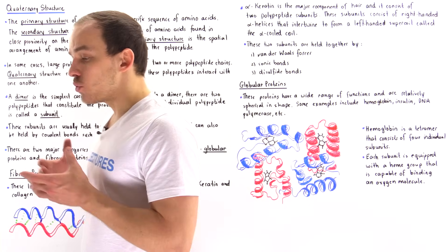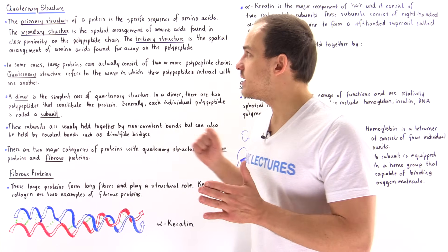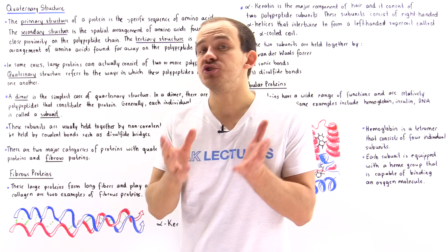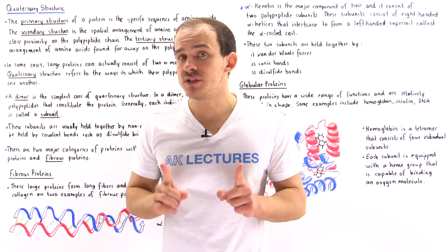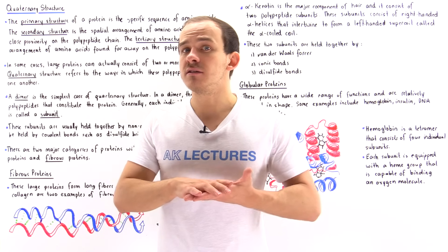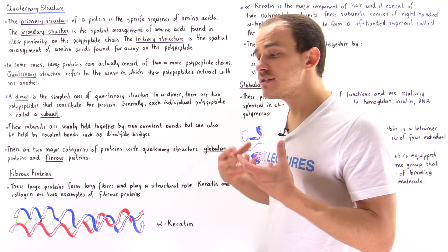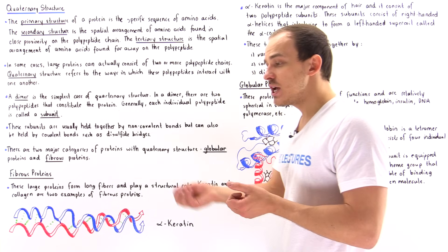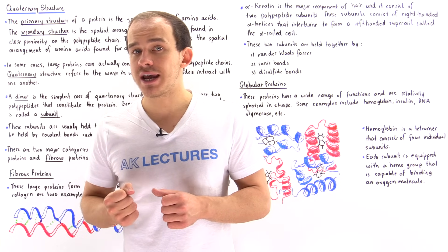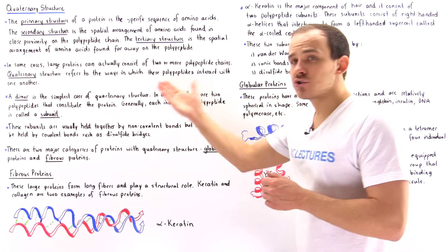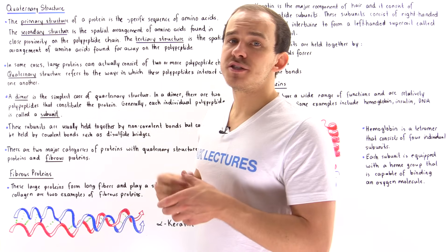In this lecture we're going to focus on the final level of protein structure. All proteins contain primary structure, the majority contain secondary and tertiary structure, and some proteins also contain a fourth and final level known as quaternary structure. A protein is said to have quaternary structure if it consists of two or more individual polypeptide chains, and quaternary structure is basically the interaction of these polypeptide chains with respect to one another.